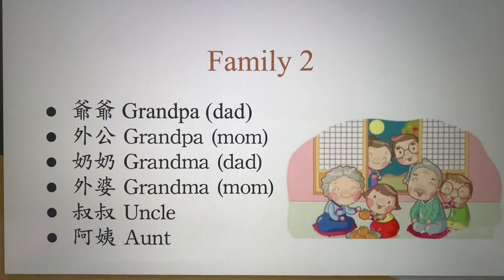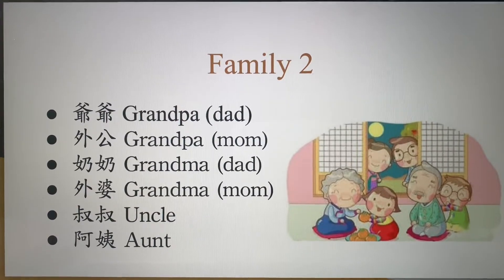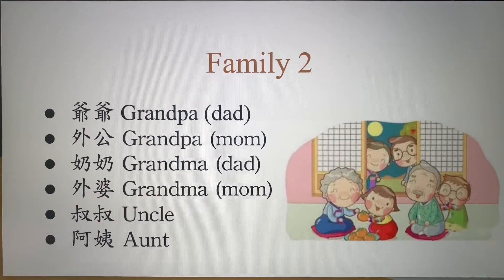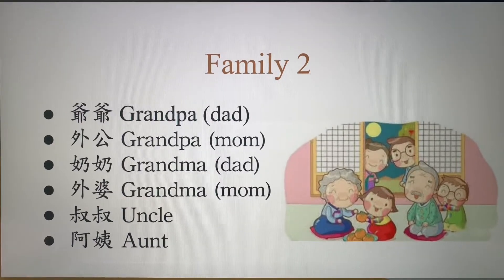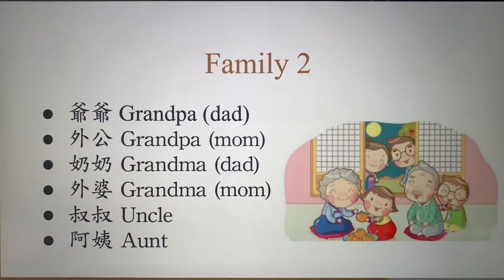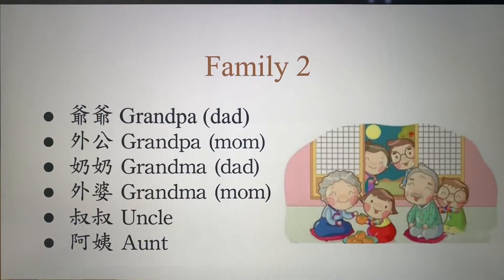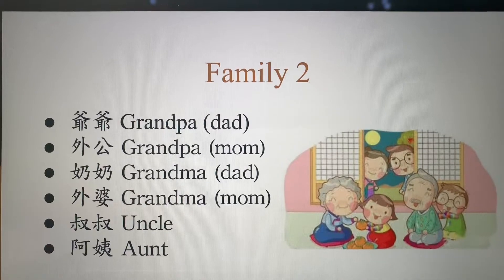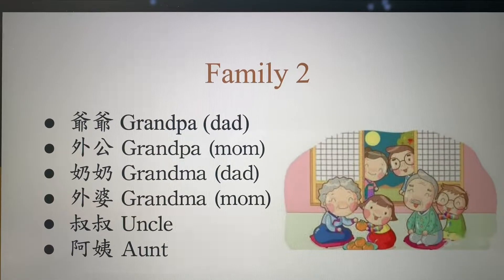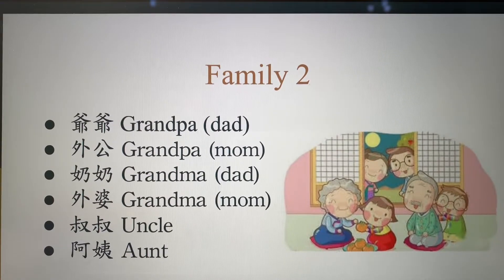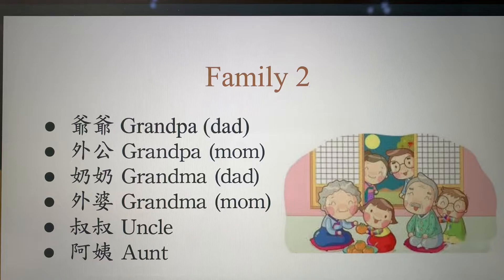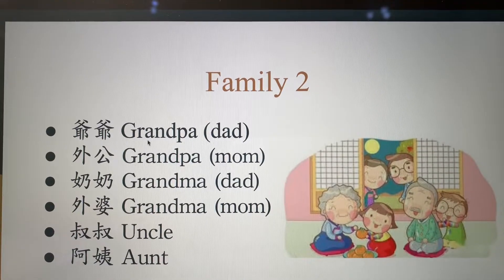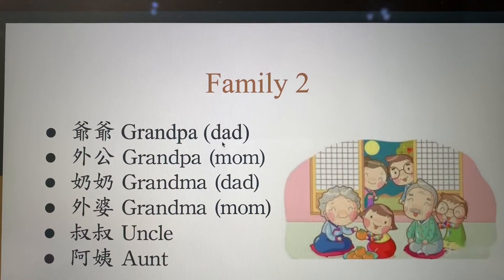The first one is 爺爺. 爺爺 is grandpa. But in English, we all use grandpa for mom's dad and dad's dad, right? But in Chinese, we have two kinds of grandpa. The first one, 爺爺, is on the dad's side.